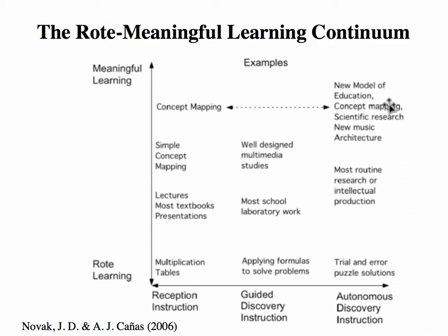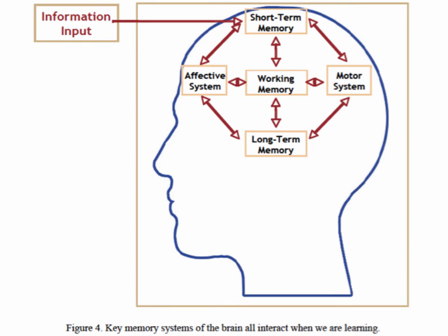In the road to meaningful learning continuum, using autonomous discovery and instruction to guide learners will help achieve better learning. There are different techniques to provide instruction: for example, we can either provide a multiplication table that learners memorize and apply to actual calculation, or they can use a concept map to present their understanding, which provides more meaningful learning activities.